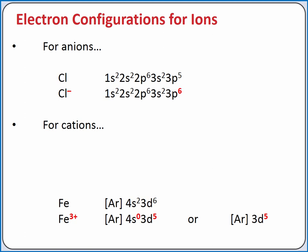When we write electron configurations for a cation, we're removing electrons from the electron configuration of the neutral atom,